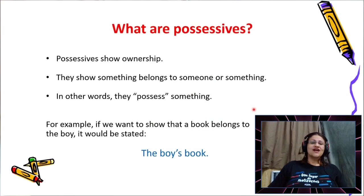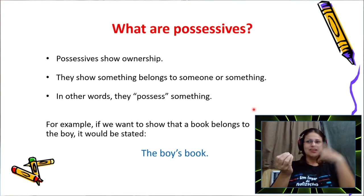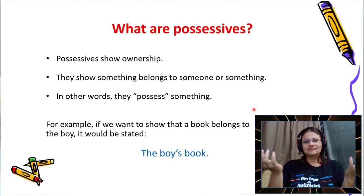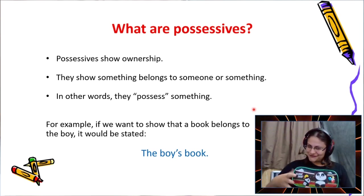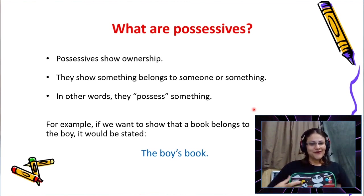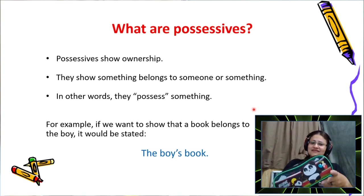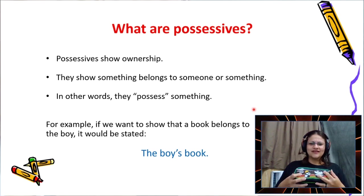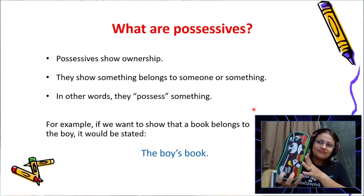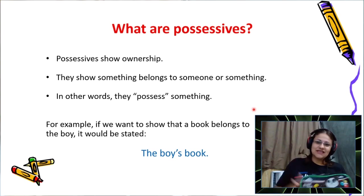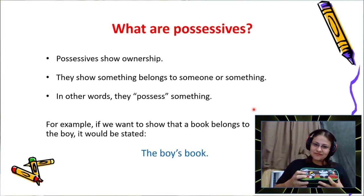Possessives show ownership. That means that something belongs to someone or something. For example, I have here my beautiful pencil case. And this pencil case belongs to me.